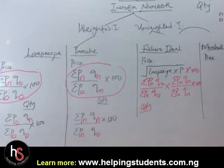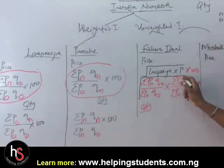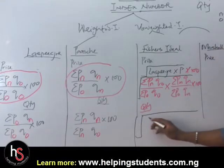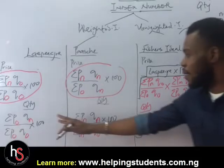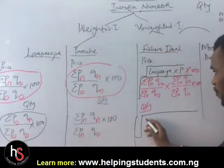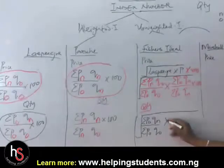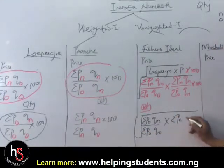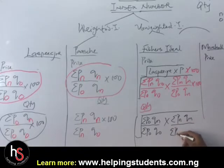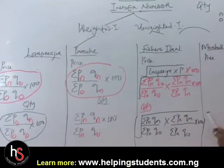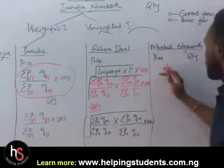For Fisher's Ideal quantity, the same method applies — Laspeyres comes first. We have the square root of (summation PoQn over summation PoQo) times (summation PnQn over summation PnQo), then times 100. An idea of the Laspeyres and Paasche formulas helps us derive Fisher's Ideal; you just need to remember it deals with square roots multiplied by 100.